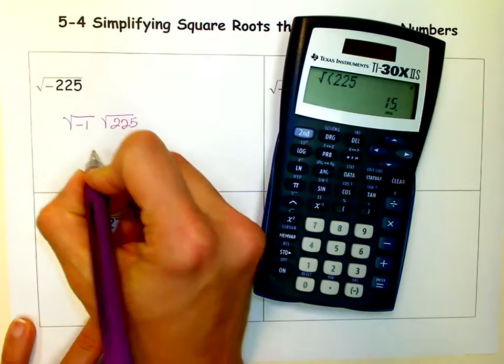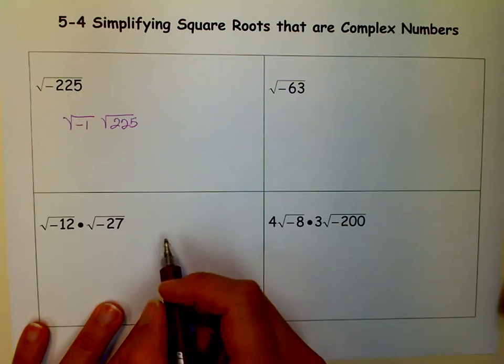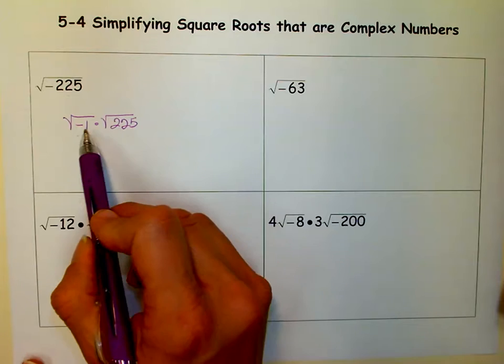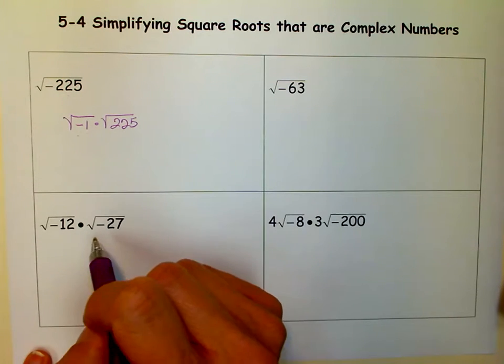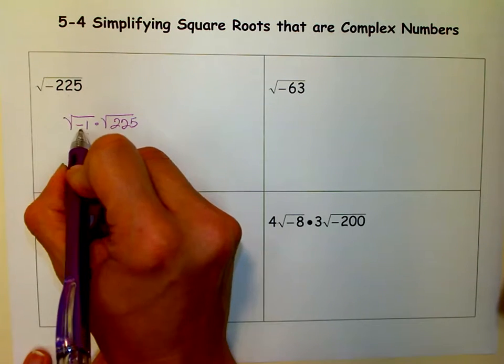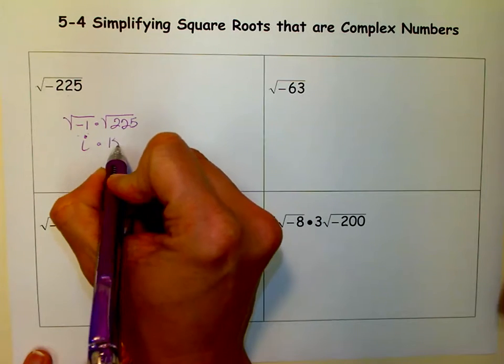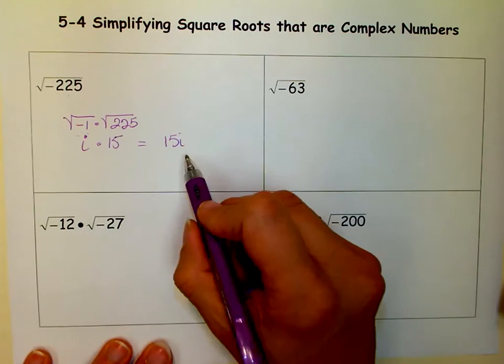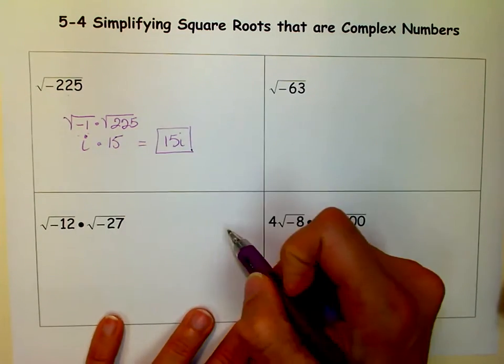You could also break it down, and in some of the other ones, we'll break it down. But so we set it up into factors of perfect squares, negative 1, and then whatever else. But then you take and you find the square root of each one. So the square root of negative 1 is i. And the square root of 225 is 15. So the answer is 15i. And we usually write it with the i on the right side. So this is our answer to this square root.